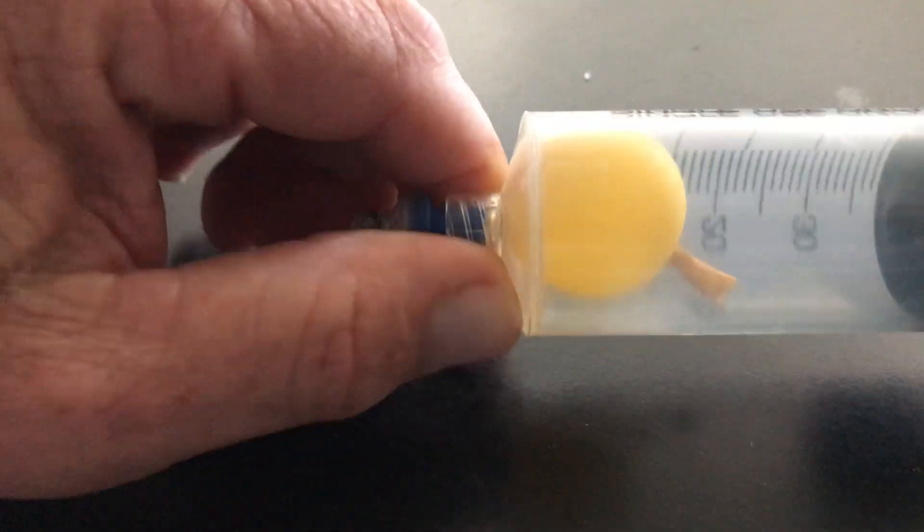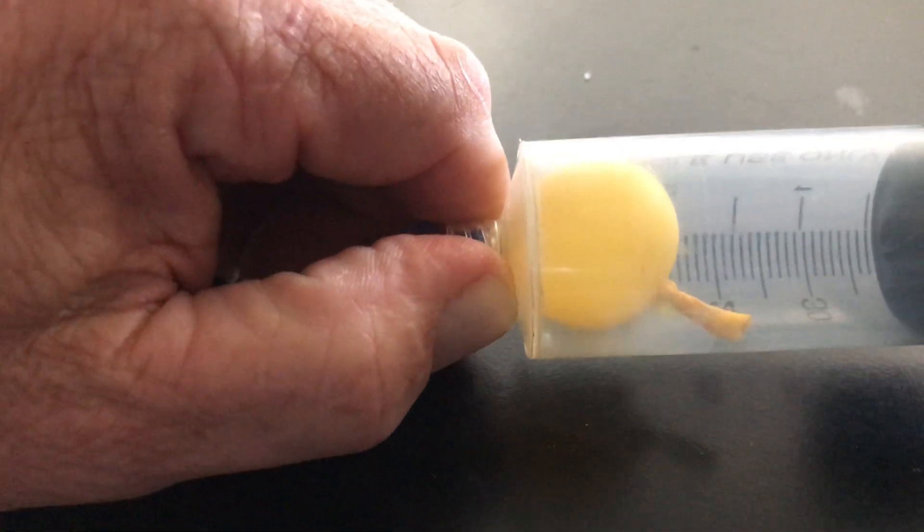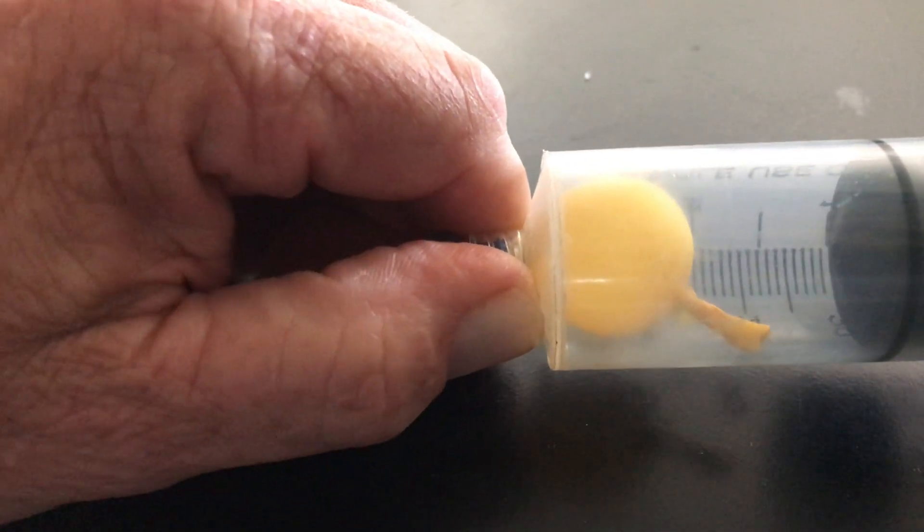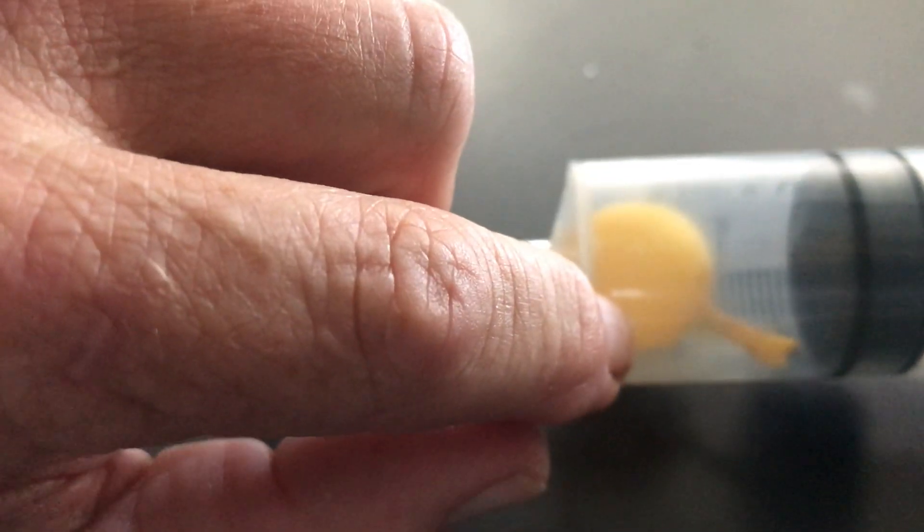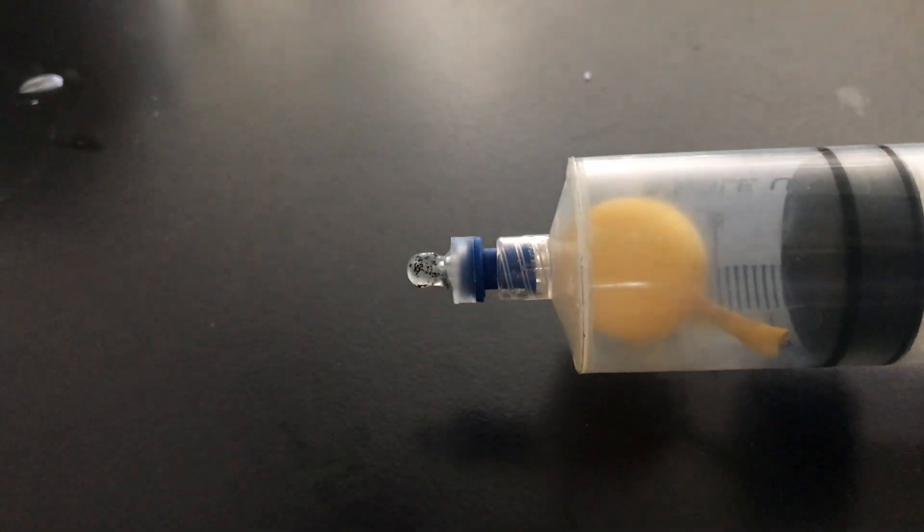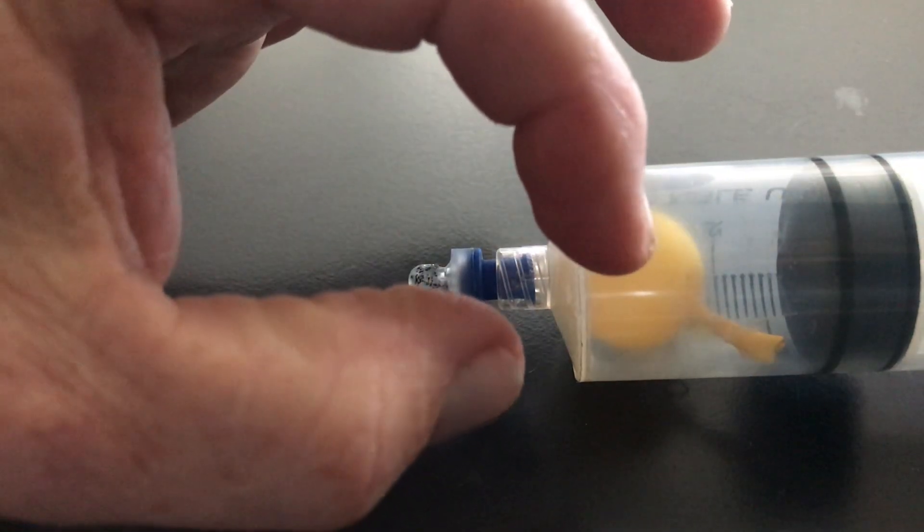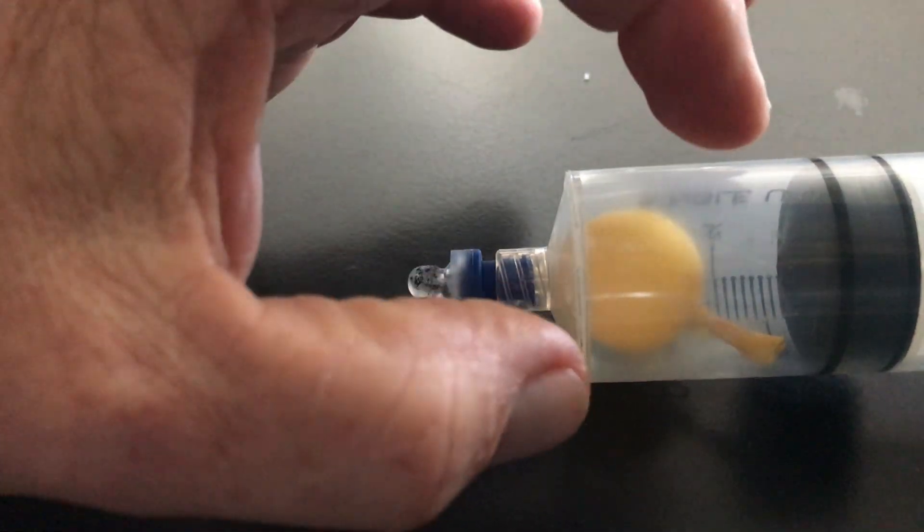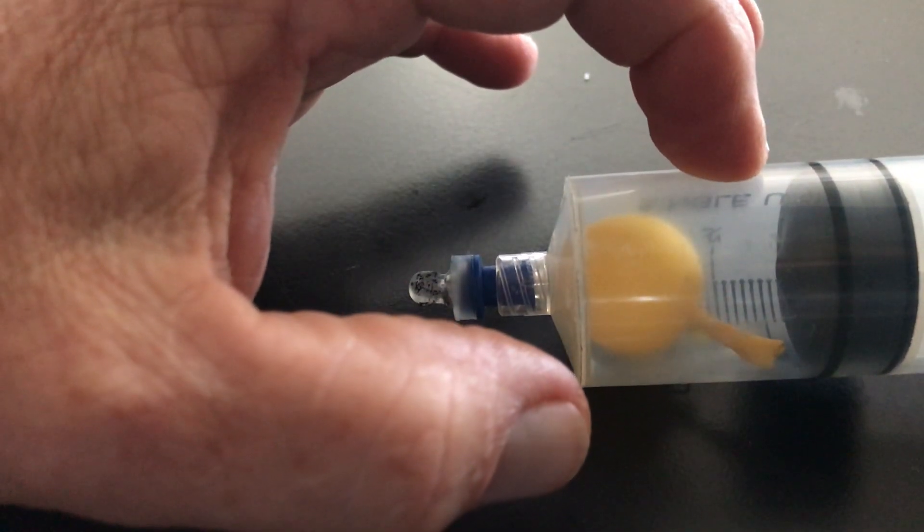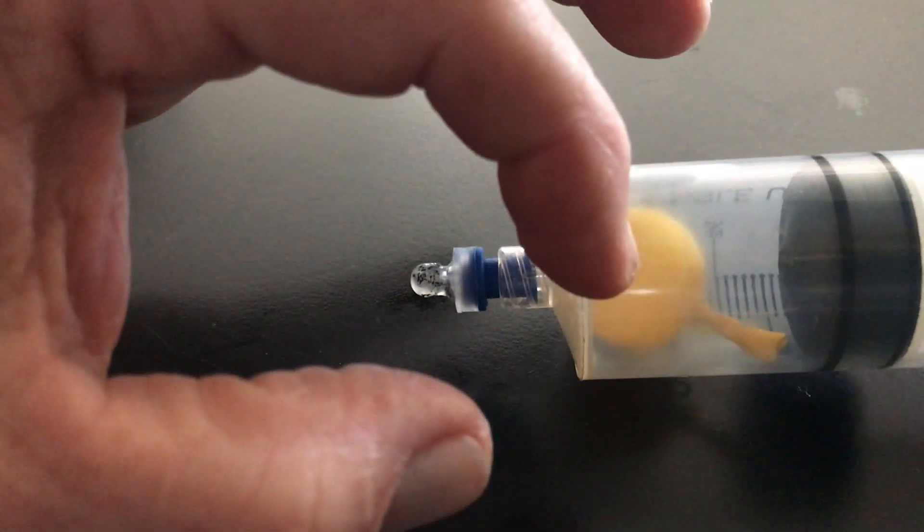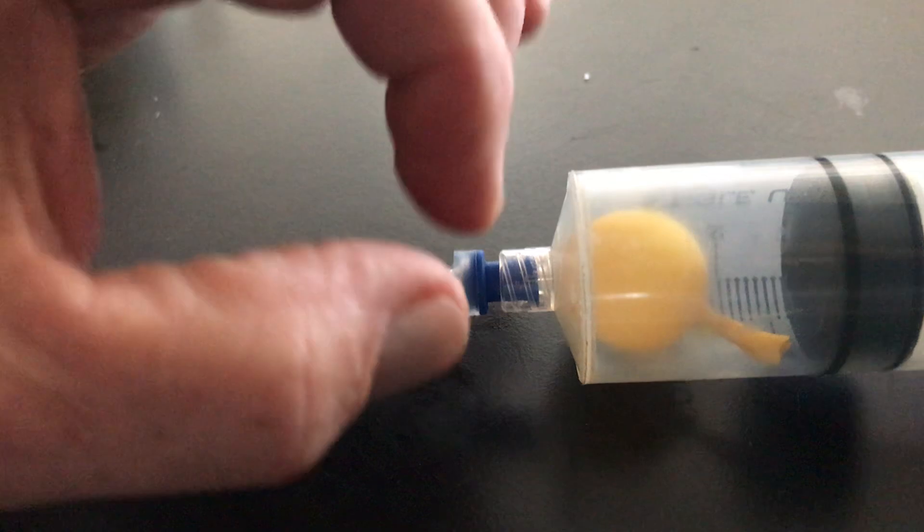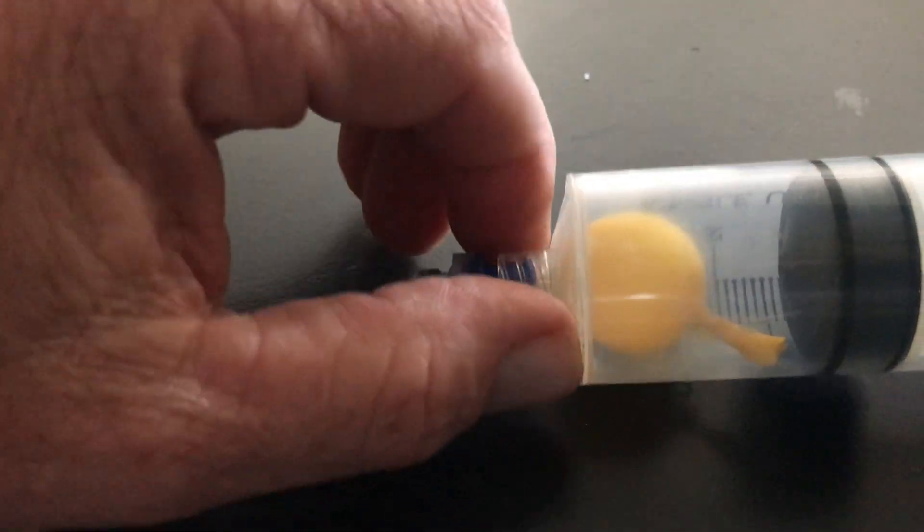I'm going to add more force on the air in the syringe and you see what happens is the volume of the balloon is shrinking. Let's sort of change the focus there. So now I have greater pressure on the outside, so I have greater pressure on the inside. So why did the balloon shrink? Let's talk about that.